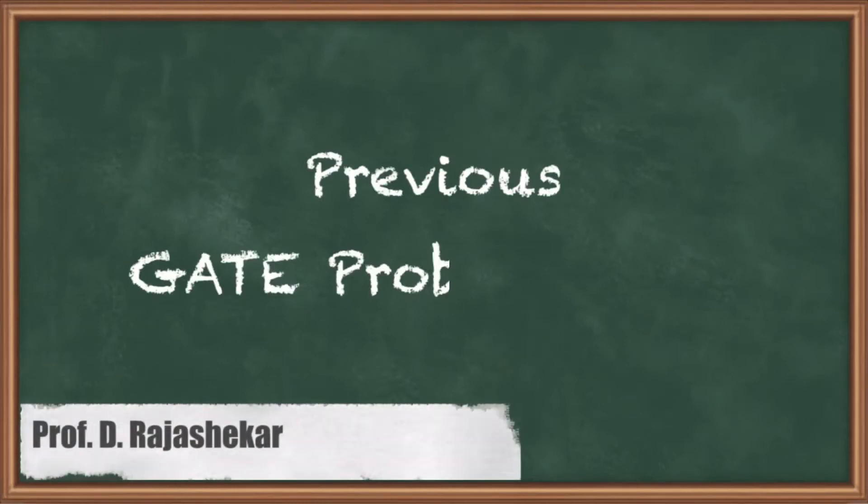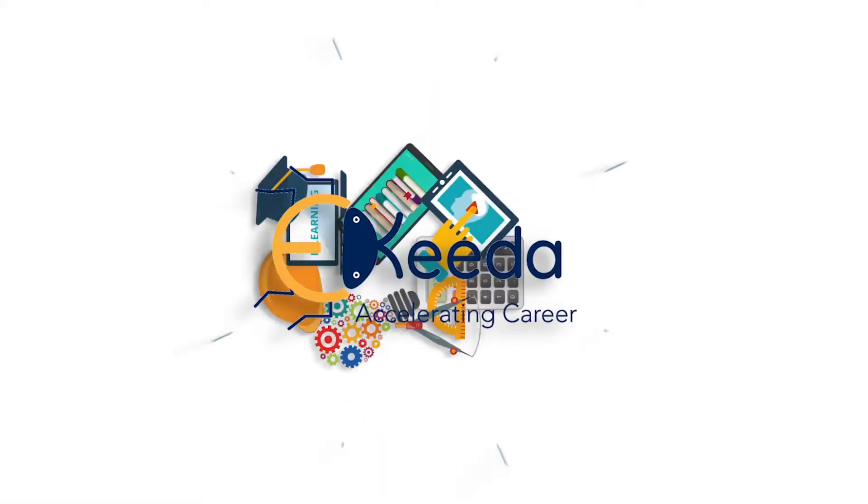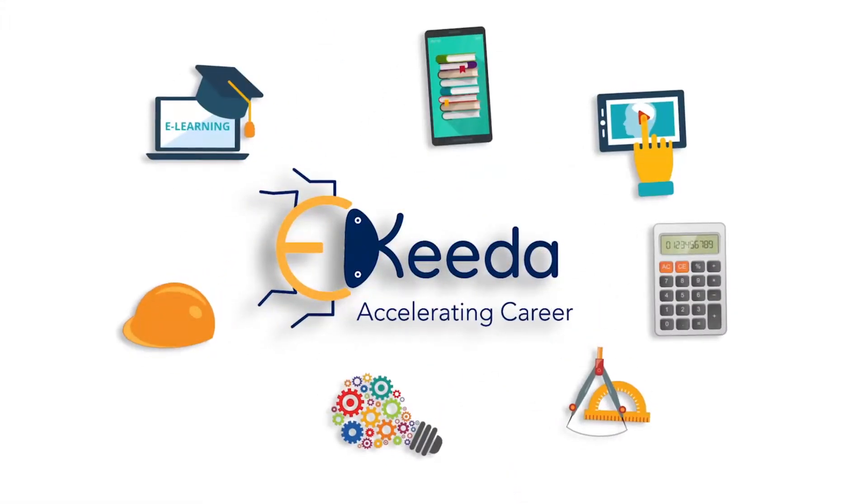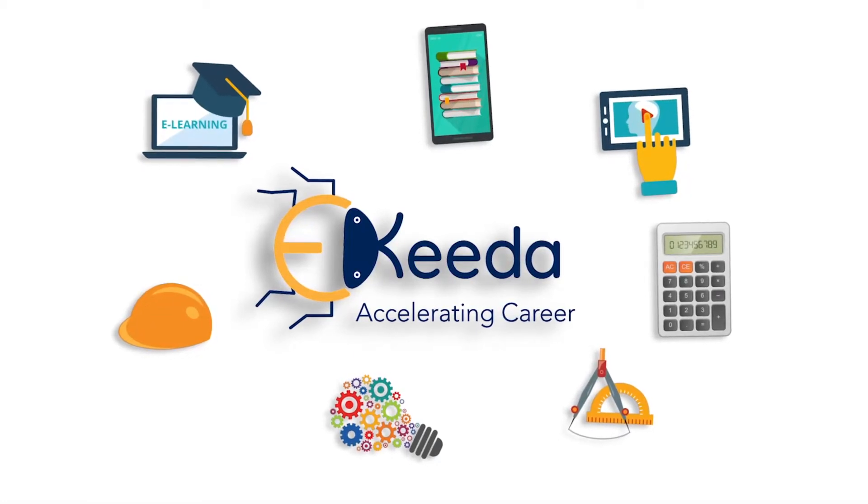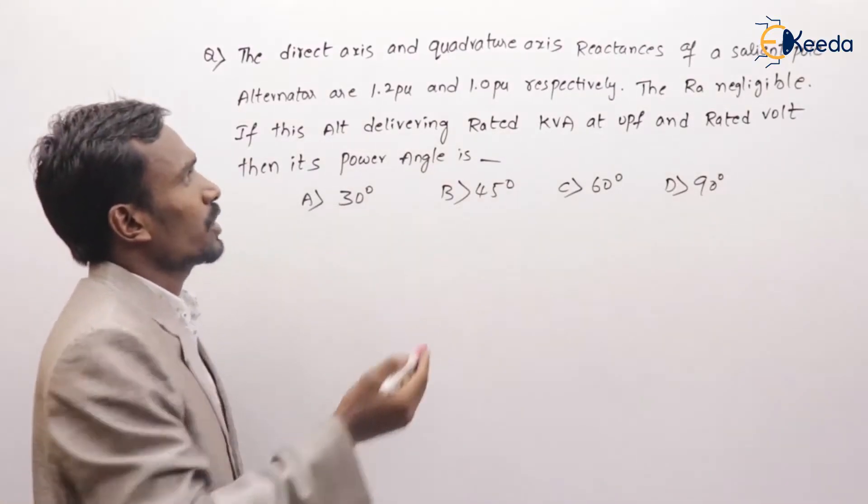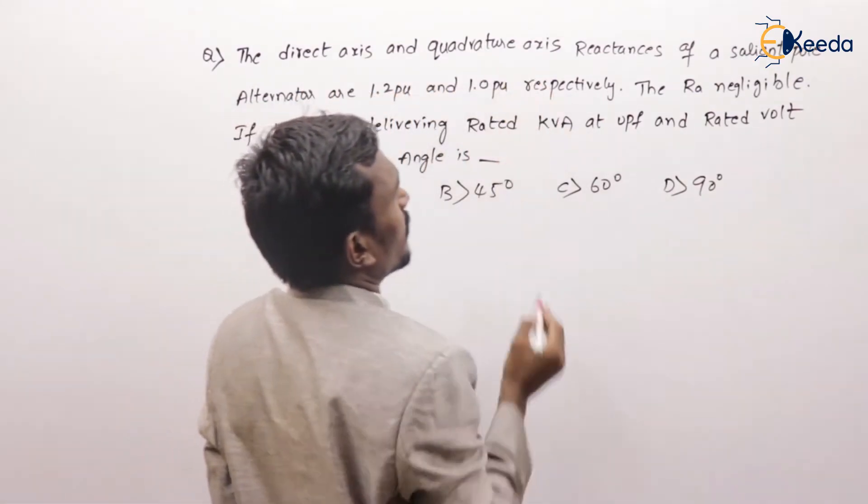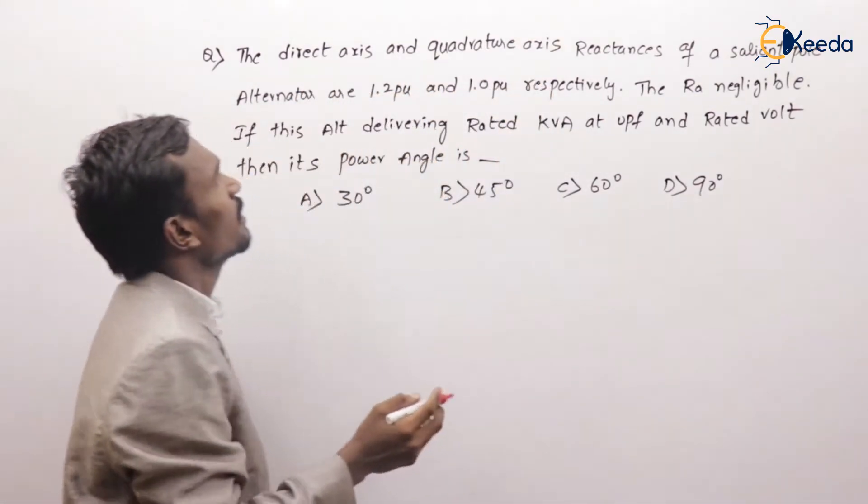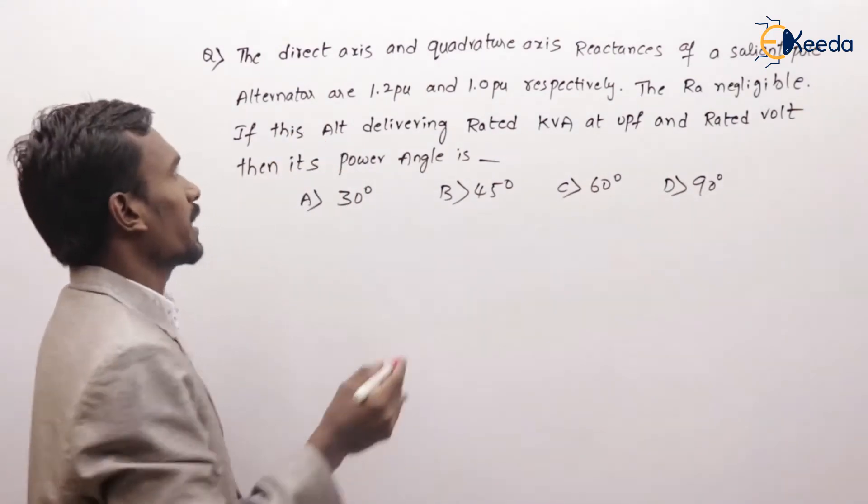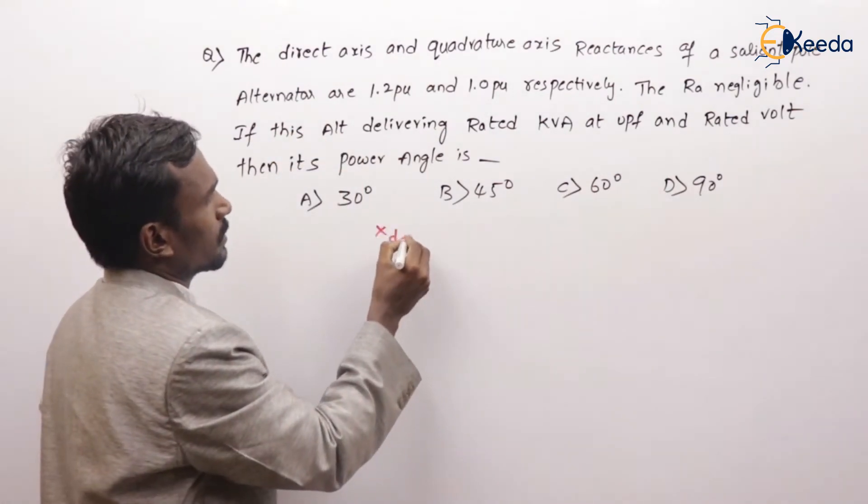Hi friends, in this video we are going to discuss a previous GATE question. The question is about the direct axis and quadrature axis reactances of a salient pole alternator. They give xd as the direct axis.